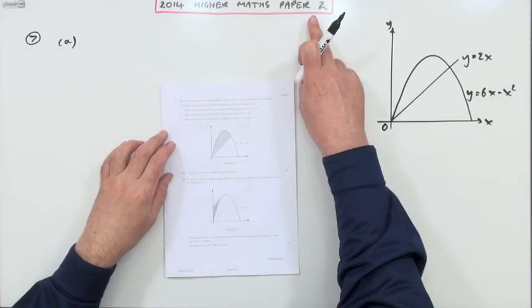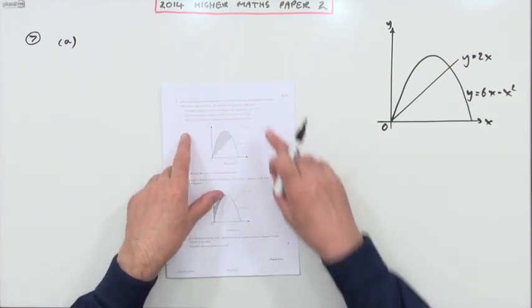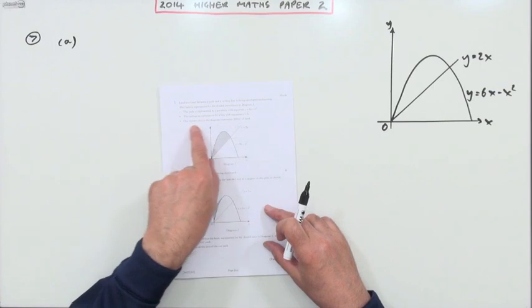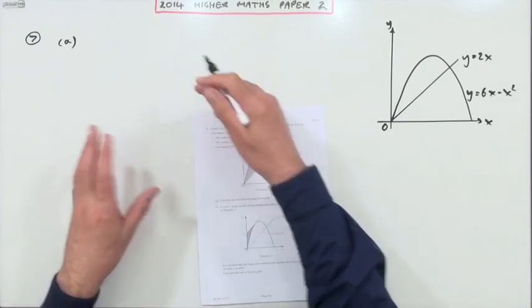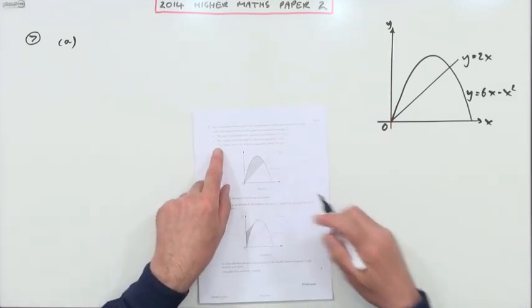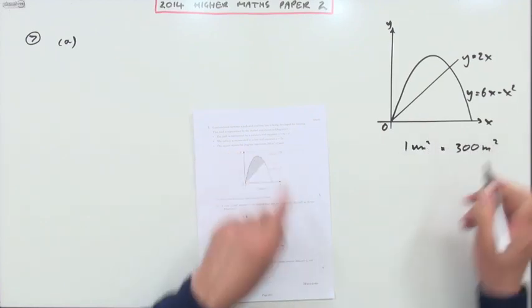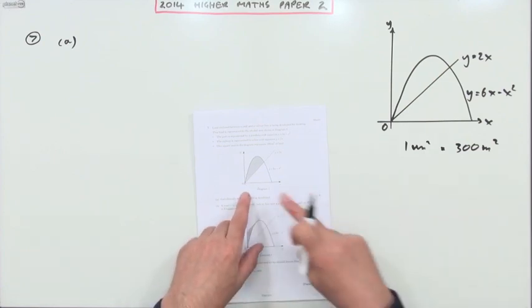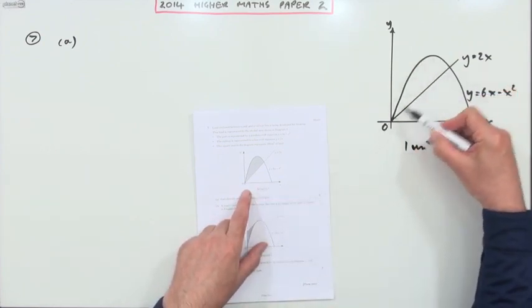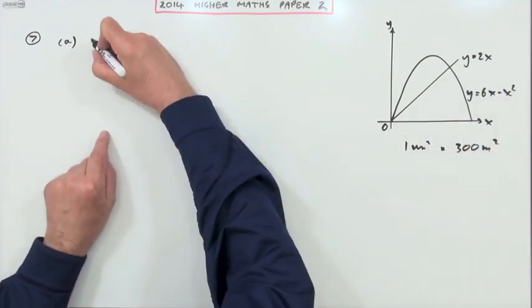So number seven from the second paper of the 2014 Higher Maths. Looking at the pictures, it's an area between curves. There's information that replicates the diagram, but this significant bit says each square unit is actually 300 square meters. So when I get my answer to the integration, I'm going to times it by 300. As far as integration is concerned, it's quite straightforward. I've got a top, I've got a bottom, and I don't know where they cross, so I'll need to find that first. I'm looking for my limits.